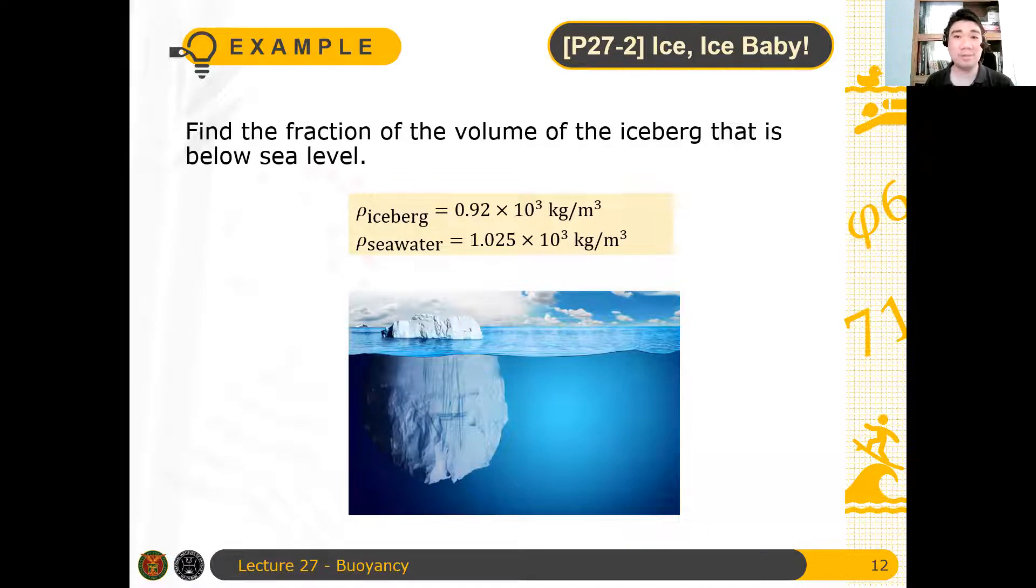So we know that ice floats on water, but the question is, what is the percentage of the ice that is partially immersed in water? We are assuming that this is seawater since this is an iceberg. The density of iceberg is known, the density of seawater is also known.